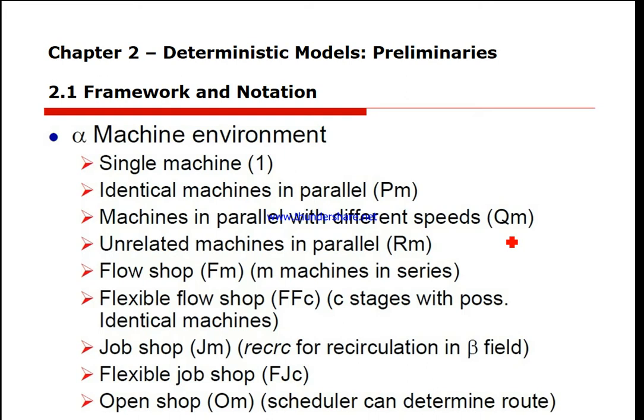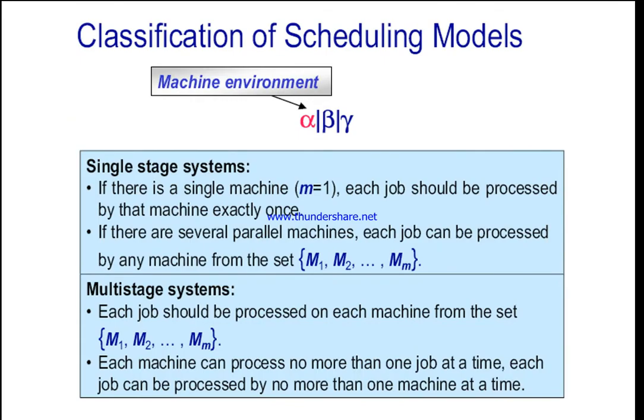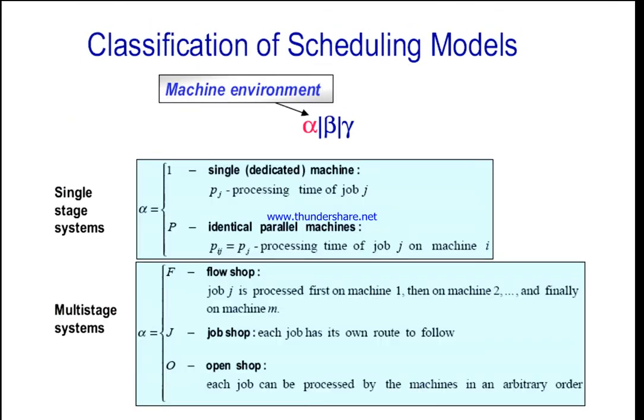We could also have what is known as an open shop. We have m machines, and each job has to be processed on each one of the m machines. However, some processing times may be zero. There is no restriction on the routing of each job through the machine environment — the schedule is allowed to determine a route for each job, and different jobs may have different routes.